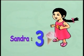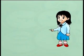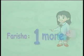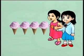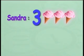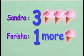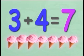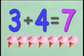Sandra bought three ice-creams. Farisha bought one ice-cream more than Sandra. How many ice-creams did they buy altogether? Sandra had three ice-creams and Farisha had one more. This means that Farisha had four ice-creams. So all together, they had three plus four equals seven. They had seven ice-creams altogether.